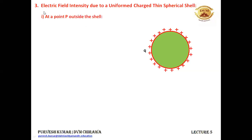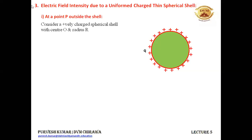First we will take a point P which is outside the shell. There are three possibilities: the point can lie outside the shell, on the shell, or inside the shell. Consider a positively charged spherical shell with center O and radius R. It is a hollow sphere, like a football, with center O and radius capital R.